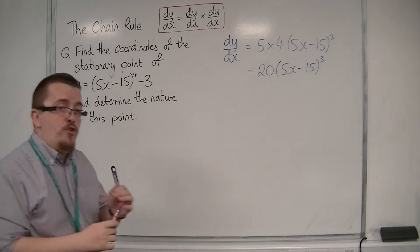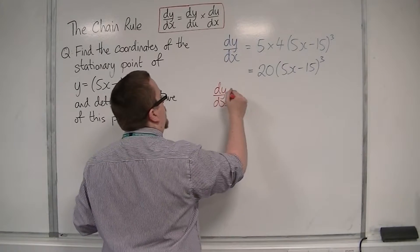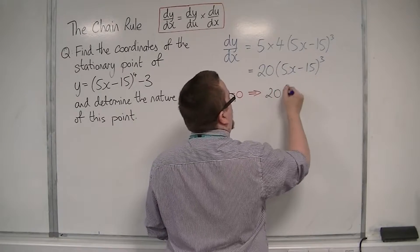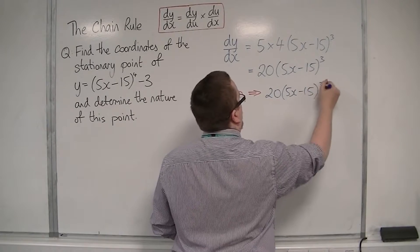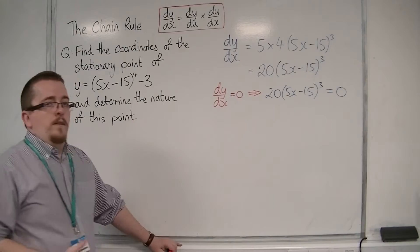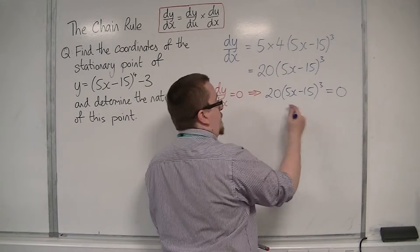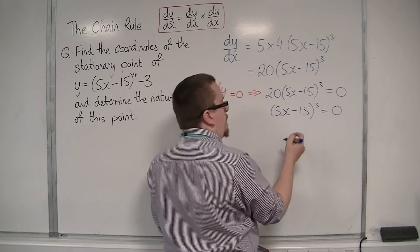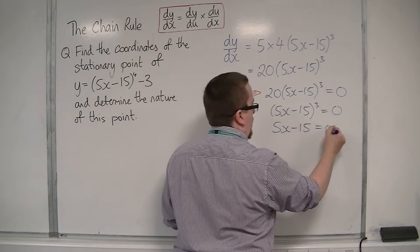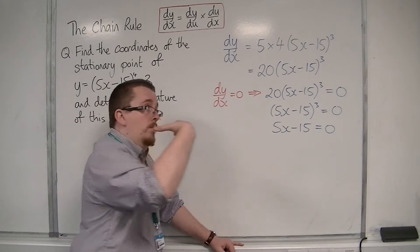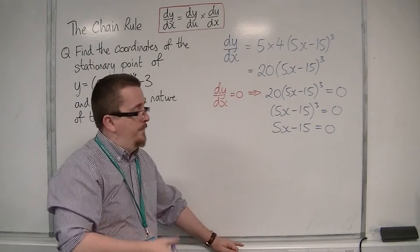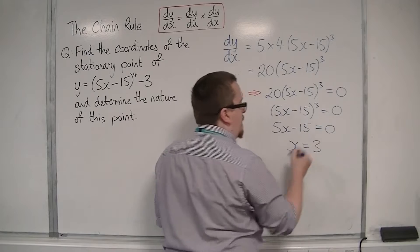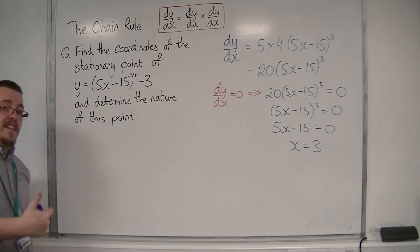Stationary points exist when dy/dx = 0. So we set 20(5x - 15)³ = 0. Dividing both sides by 20 and taking the cube root of both sides, we get 5x - 15 = 0. Adding 15 to both sides and dividing by 5 gives x = 3. So the x-coordinate of the stationary point is 3.